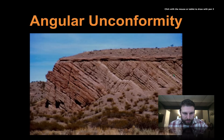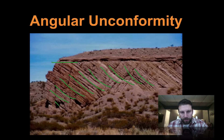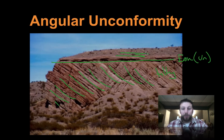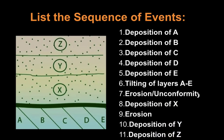Here's another angular unconformity, very similar to what we saw before. Notice the angle — these were all horizontal layers at some point, then they were tilted. So there was a tilting event, then erosion — the unconformity — and then more deposition. We could sequence events like this: the oldest is on the bottom, so we have deposition of A, B, C, D, and E. They were then tilted, then we have our unconformity, meaning erosion, and then deposition of X. Notice the unconformity here.